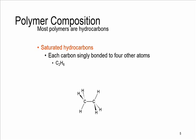In polymers we have saturated hydrocarbons, which means each carbon is bonded singly to four other atoms, so the bond between carbons are just single bonds. An example is Ethane C2H6, as you can see here.